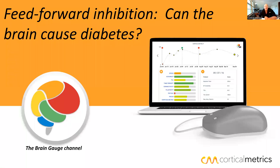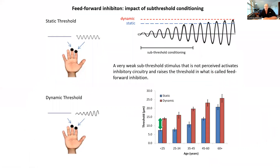Hey, greetings. Welcome to the BrainGage channel. Got an interesting question about feedforward inhibition the other day. And basically the question was: can the brain cause diabetes? I think it's probably sort of a chicken-and-egg question, but let's take a look at what we know. And just as a quick review, what's feedforward inhibition? What exactly is it?